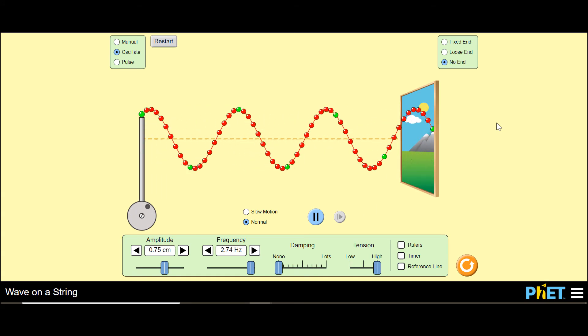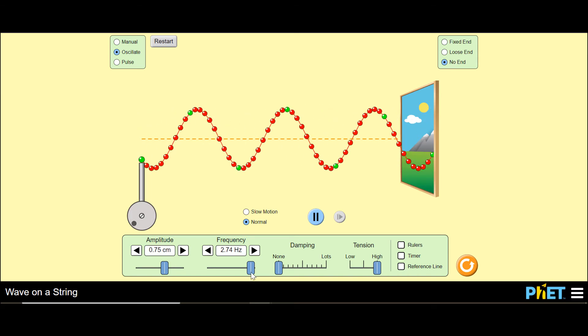It's 3.0 times 10 to the 8 meters per second. And it doesn't matter the frequency of the light or the wavelength of the light, the speed at which it travels is still the same.